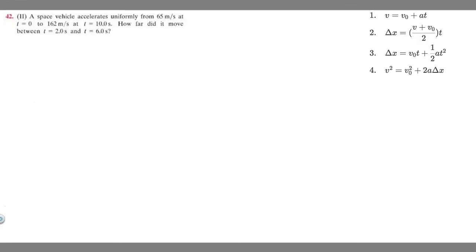In this problem we're told a space vehicle accelerates uniformly from 65 meters per second at t equals 0 to 162 meters per second at t equals 10 seconds. How far did it move between the interval of t equals 2 seconds to t equals 6 seconds?